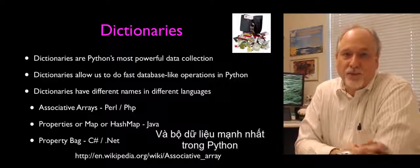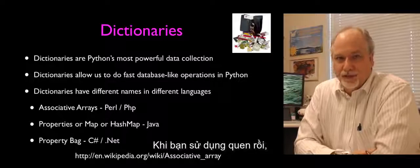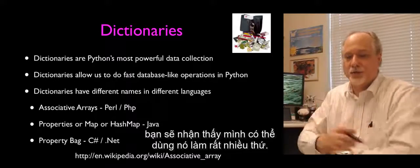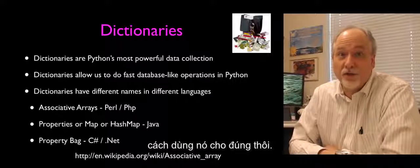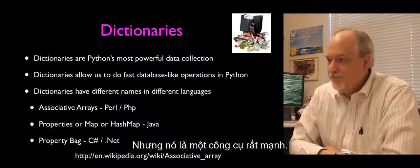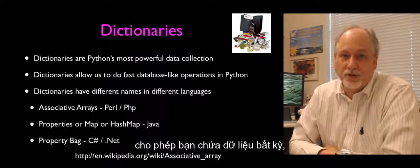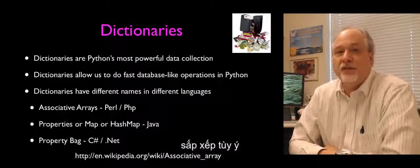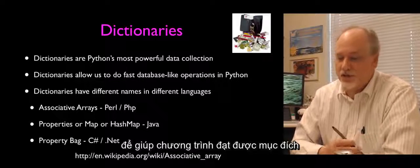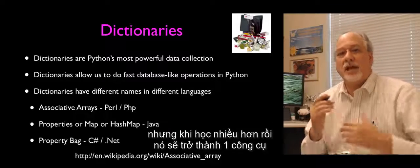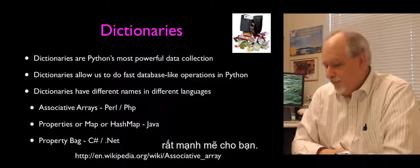Python's most powerful data collection is the dictionary. When you get used to wielding them, you'll say, wow, I can do so much with these things. At the beginning, you're just learning how to use them without hurting yourself. But they're very powerful — it's like a database. It allows you to store very arbitrary data organized in however you feel like organizing it in a way that advances the cause of the program you're writing.